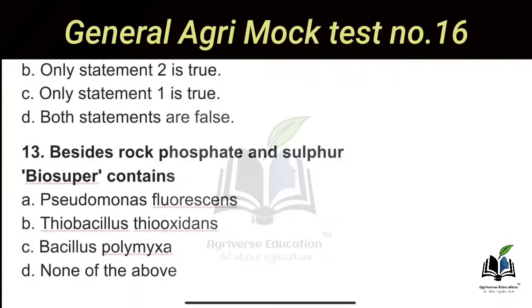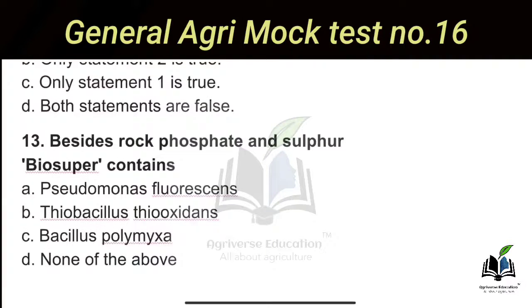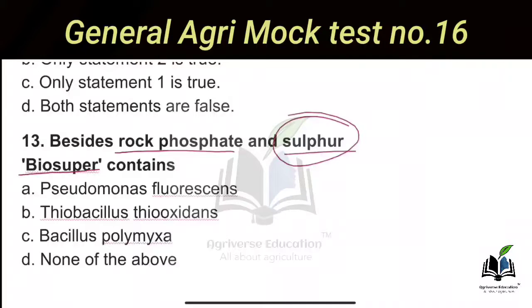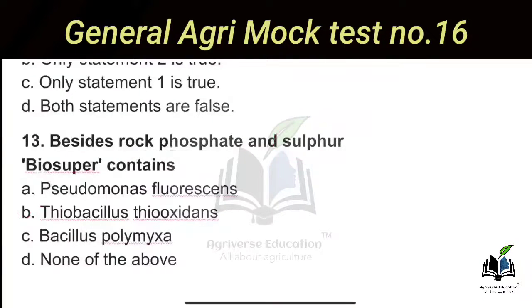The next question: Besides rock phosphate and sulfur, what does biosuper contain? Biosuper is a formulation that contains rock phosphate and elemental sulfur. In addition, it contains a sulfur-oxidizing bacteria — Thiobacillus thiooxidans. So Option B is the right answer.